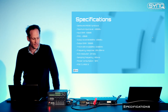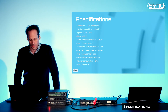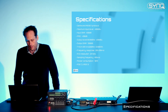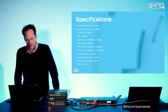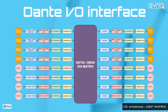Regarding the PoE, it's PoE class 3, so basically any regular PoE switch can handle the power for this device. Now, we're going to show you the matrix. On the left-hand side, you will see the analog input. We are using a Neutrik XLR combo connector.